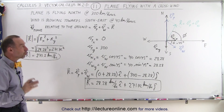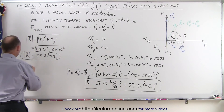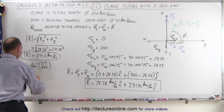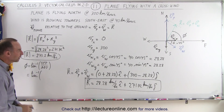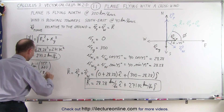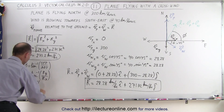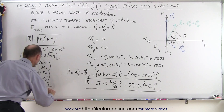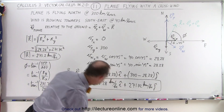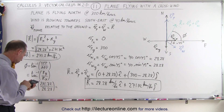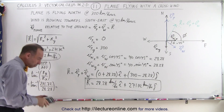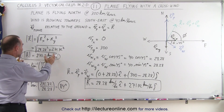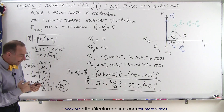Finally, to find the direction relative to the positive x-axis, phi equals the inverse tangent of the opposite side over the adjacent side — that is, the y component over the x component of the resultant. So phi equals the inverse tangent of 271.72 divided by 28.28, which gives approximately 84 degrees. That is the direction relative to the positive x-axis, completing the full description of the plane's velocity relative to the ground.